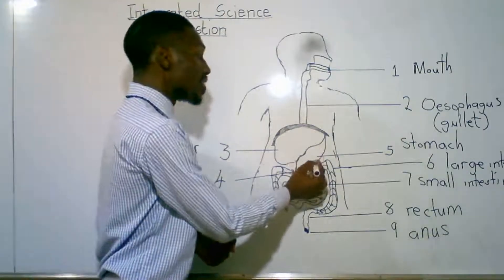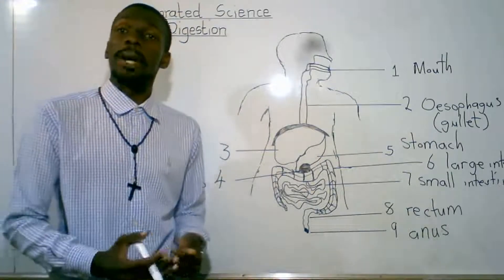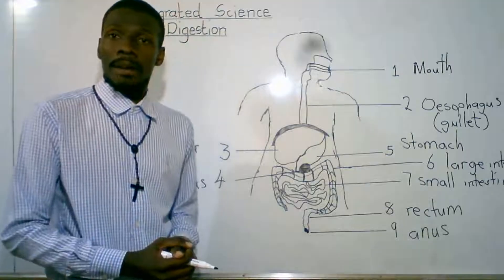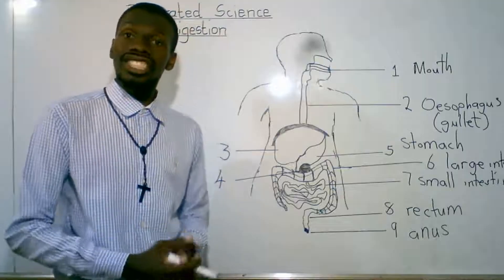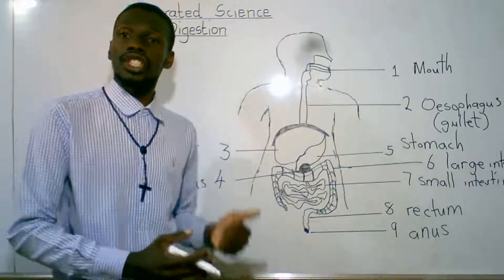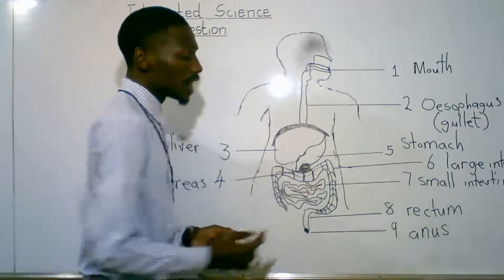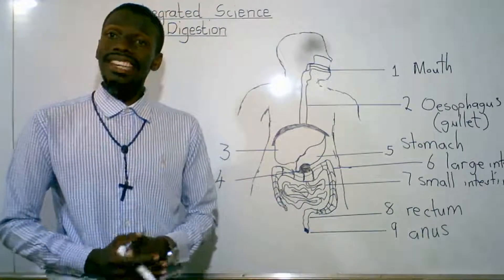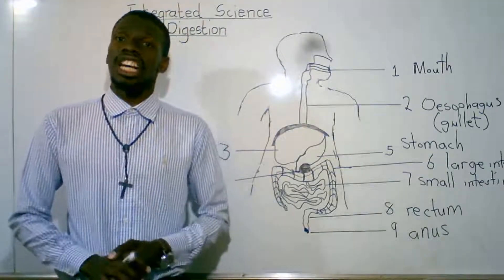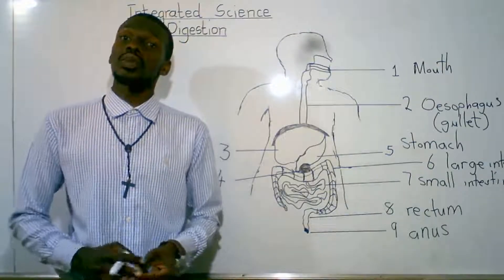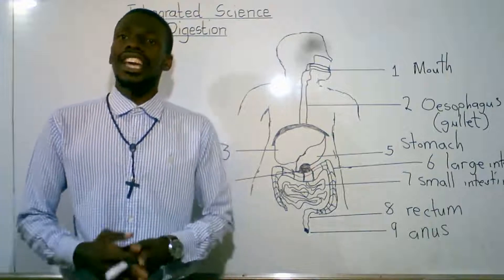In the stomach, gastric juice is produced that kills bacteria that may be present. In the stomach, proteins are being digested. From the stomach, nutrients are being pushed into the small intestine. It is in the small intestine where most of the digestion takes place. Digestion of carbohydrates as well as fat is done in the small intestine.